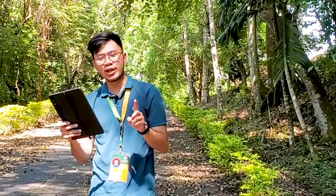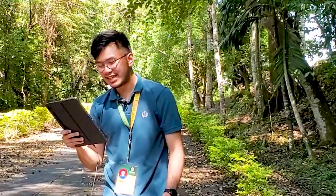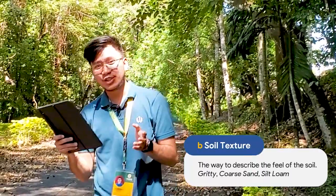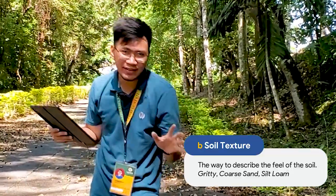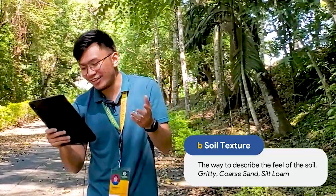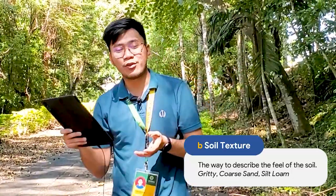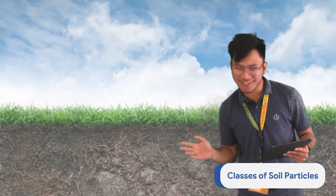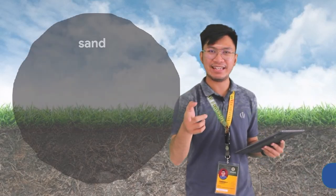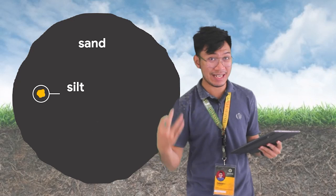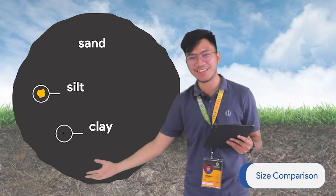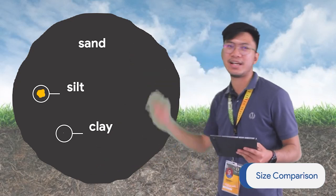Another soil property is soil texture, which describes the feel of the soil. It can be gritty like coarse sand, or fine like silt loam, which has the feel of flour. We have three classes of soil particles: sand, silt, and clay. Sand is the largest, with a diameter ranging from 0.05 to 1 millimeter. Silt ranges from 0.002 to 0.05 millimeters. Clay is the smallest, at less than 0.002 millimeters.